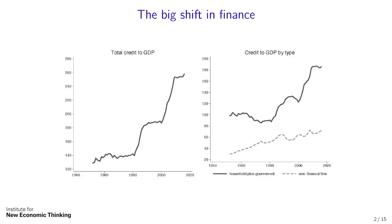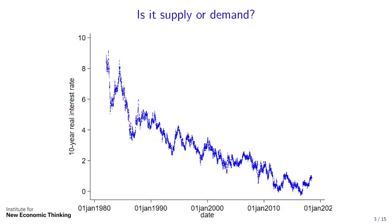The next thing is to look not just at quantities but at prices — the price of credit. Credit to GDP has increased by 120 percentage points of GDP — a huge increase. The interesting fact is that despite that huge growth in quantity, the price of credit, which is essentially the interest rate, has gone in the other direction. I'm showing the 10-year real interest rate, the most liquid market for long-term debt. It's uncontested that globally interest rates have gone down significantly, to the extent that we've been hovering around zero in real terms, and it's been extremely difficult to get out of this.